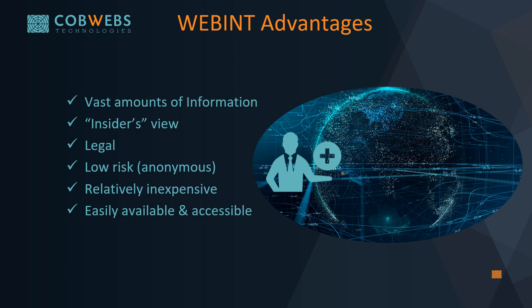So now let's try to understand the advantages of web intelligence. First of all, we have a large amount of information. The internet includes social networks, newspapers, blogs, etc. — endless information that we can use. This is both a blessing and a curse. We can find so much interesting and relevant intelligence; however, it's difficult to filter the relevant information.